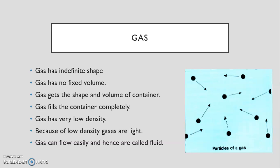Next is gas. Gas has an indefinite shape, gas has no fixed volume, gas gets the shape and volume of a container, gas fills the container completely, gas has very low density. Because of low density, gases are light, and gas can flow easily. So gas has an indefinite shape. Whenever you see a kettle and it's steaming from the hot water, you can see the steam absolutely bursting out of the container, and that gas can go literally everywhere. There's no fixed shape where it has to go, it doesn't stay in one place. Gas has no fixed volume, so it can take up many different spaces, which makes it lighter.